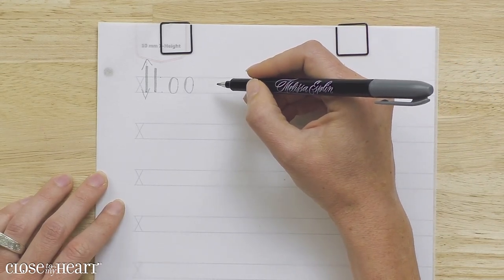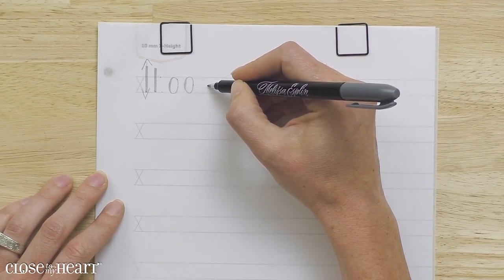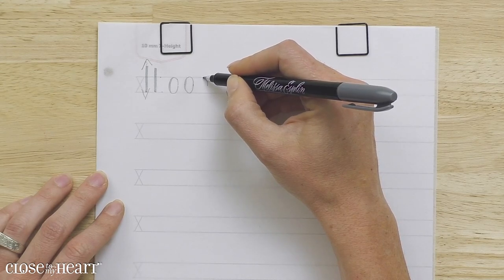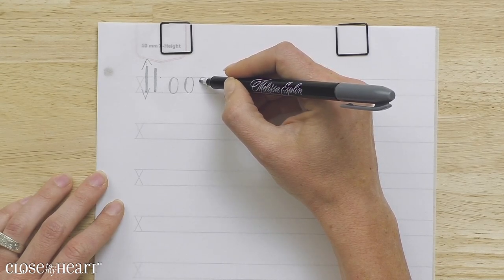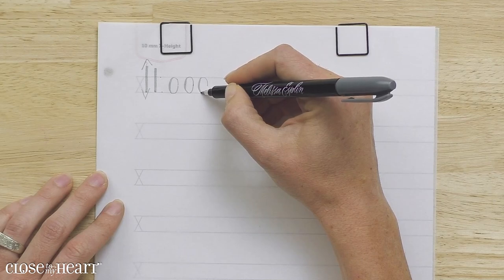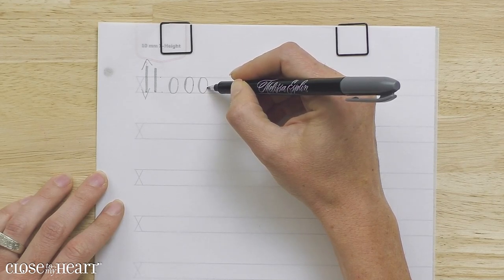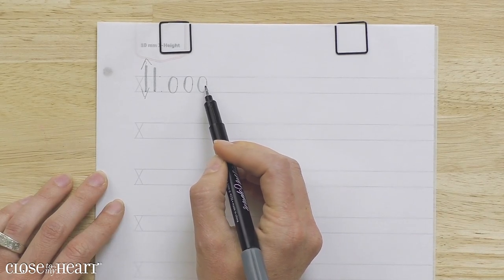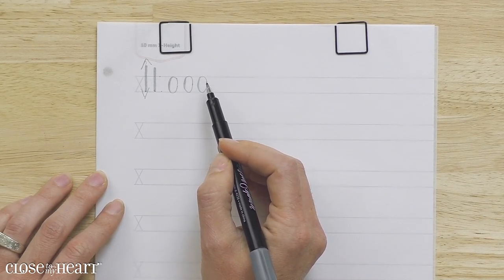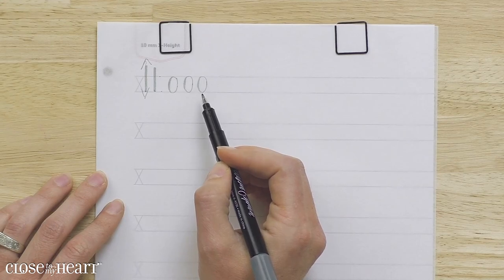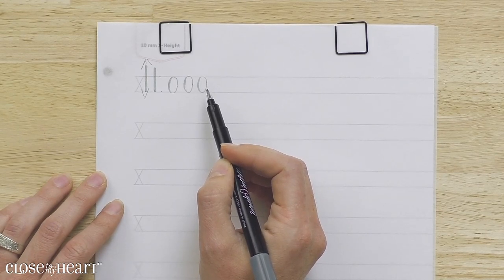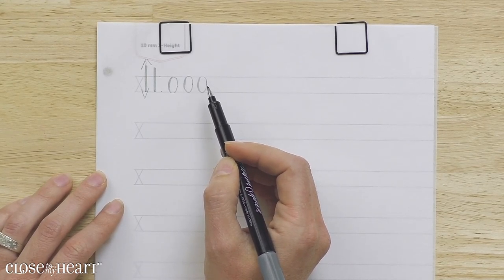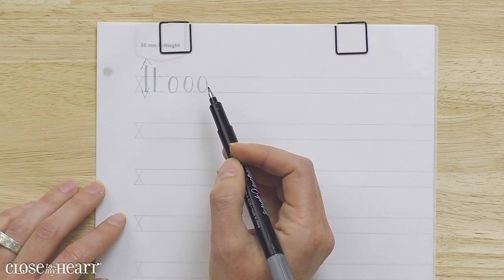Let's do that one more time. Start at three o'clock, work your way up to 12 o'clock, apply pressure at nine, release pressure at six, and meet back up at three. If you're struggling to meet back up, try to look where you want your pen to go. Don't look at your pen, but look where you want your pen to be. This is a really key tip for making great calligraphy.